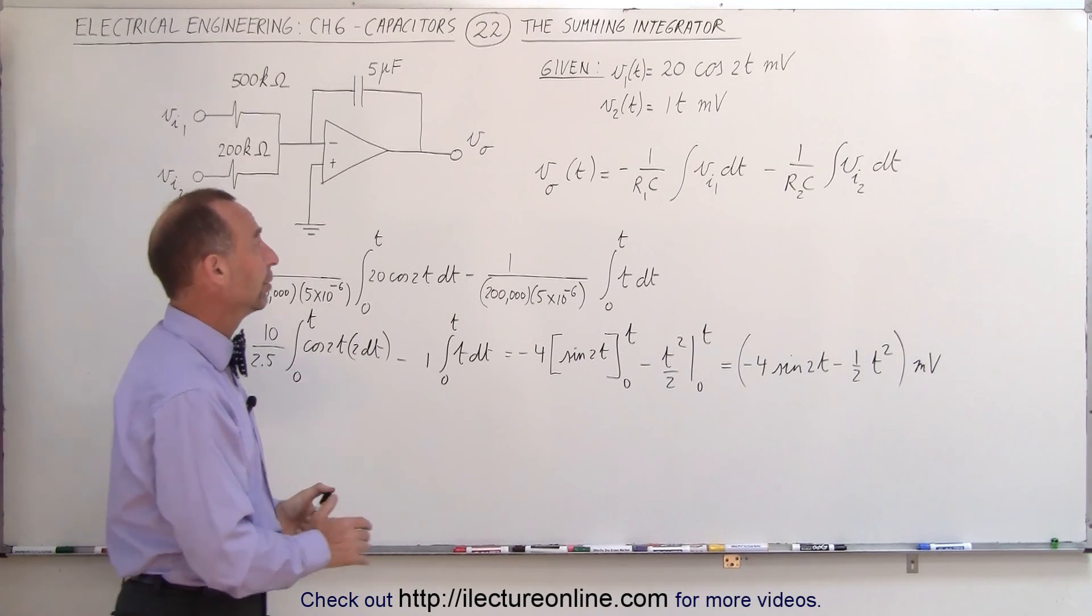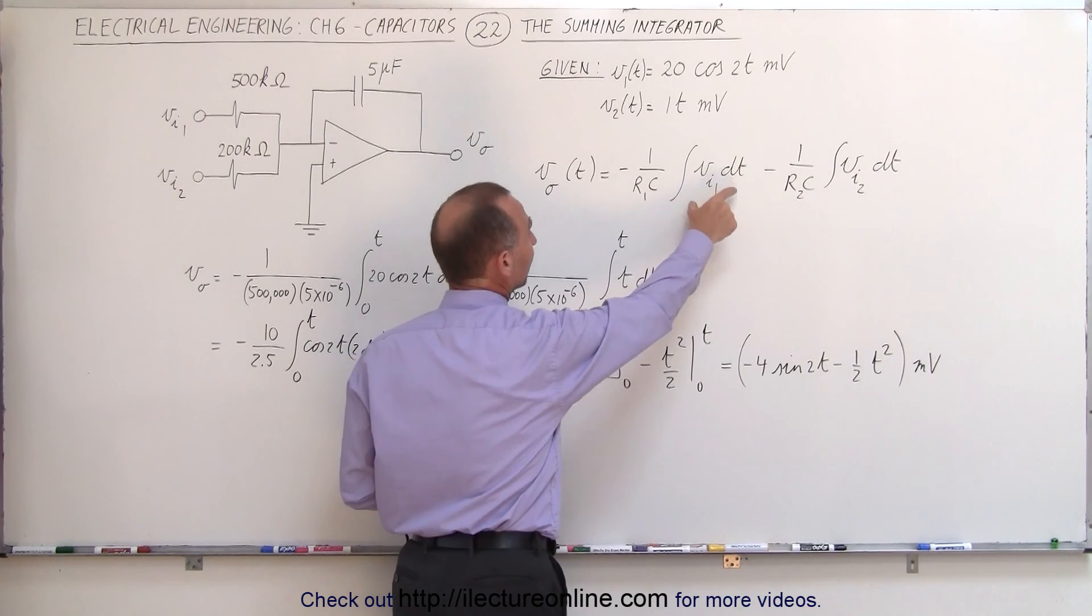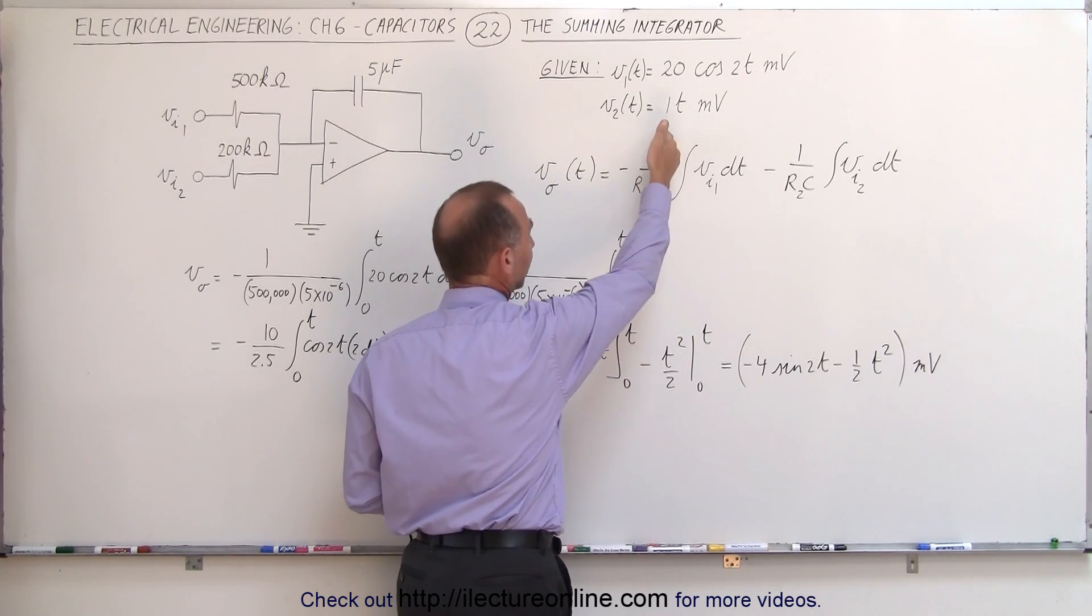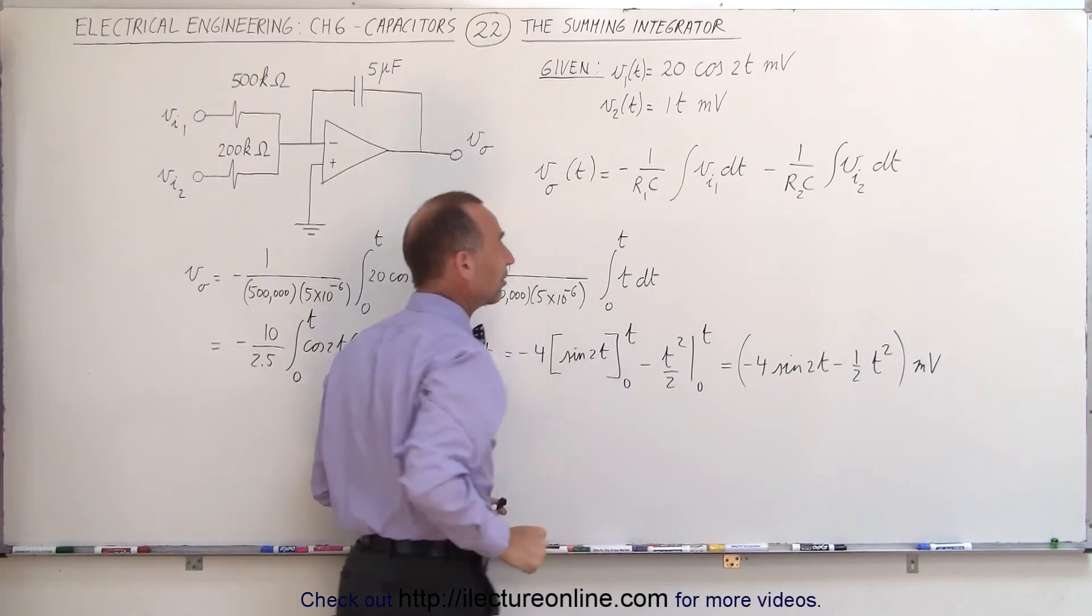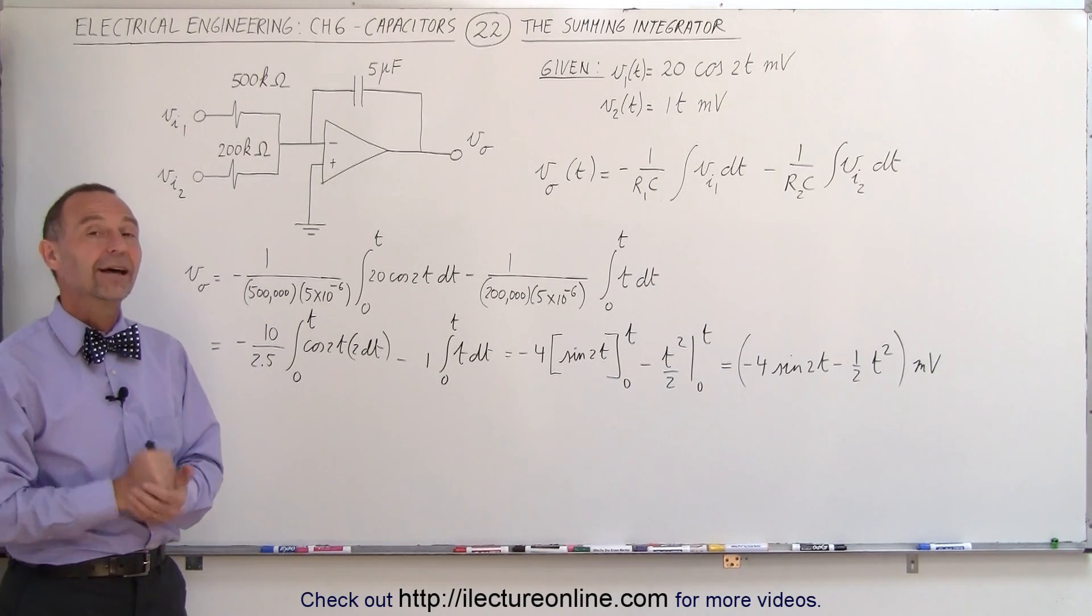Again, it's pretty straightforward. Notice that in each case, the output is written as the integral of the input voltage, and we have the factor 1 over RC, where, of course, RC is the time constant of each of the two input circuits. And that's how we do that. Thank you.